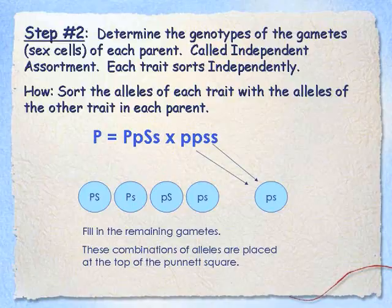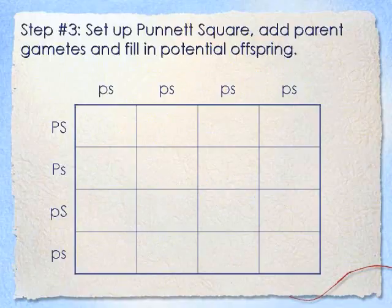Now I'm going to make the gametes for the other parent. Since it is little p, little p, little s, little s, there's only one possible combination that this parent could have for its gamete: little p with little s. They will all be the same. Now I'm going to set up my Punnett square — it's a 4x4 square with 16 boxes, different from a monohybrid which is only 2x2 with 4.